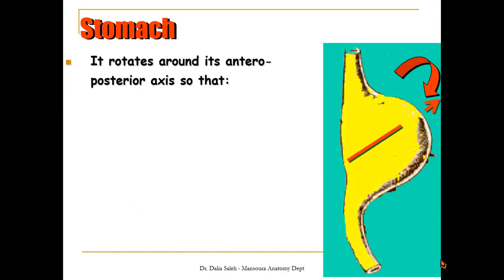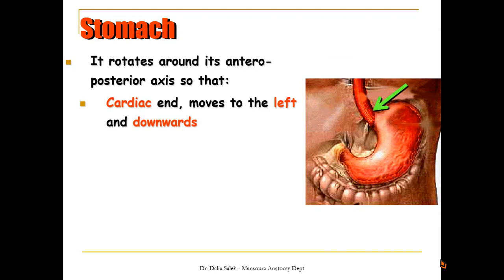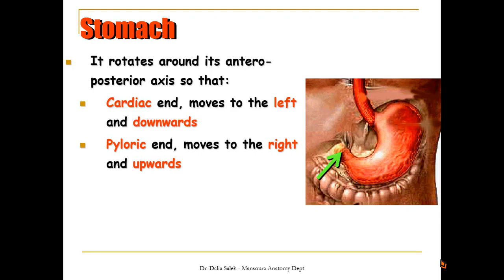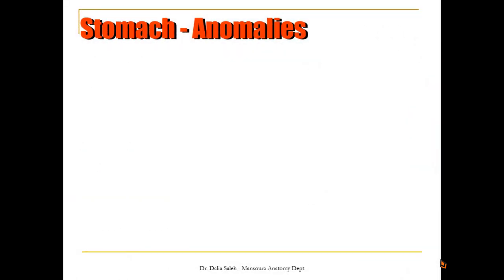At the same time, the stomach rotates around its anteroposterior axis, also in a clockwise direction. Its cardiac end moves downward and to the left, while its pyloric end moves upward and to the right. The stomach then assumes its final position, with its long axis extending from above-left down to the right.